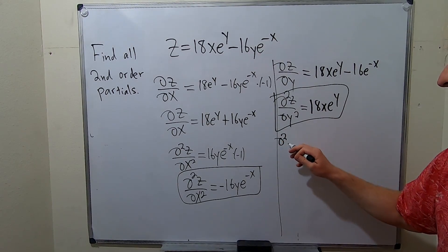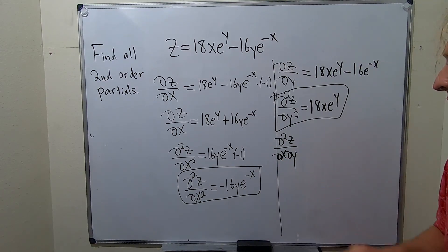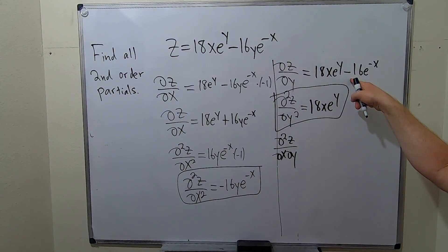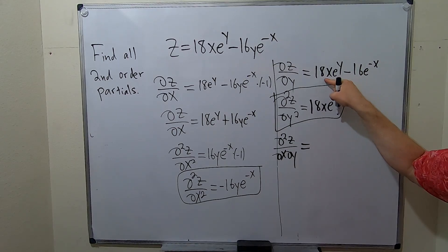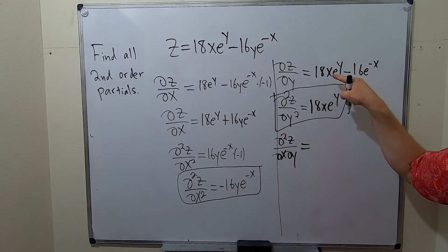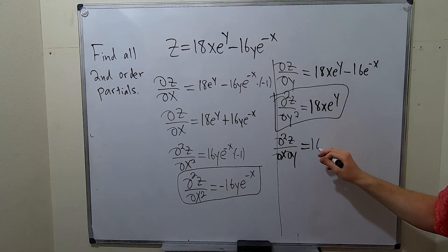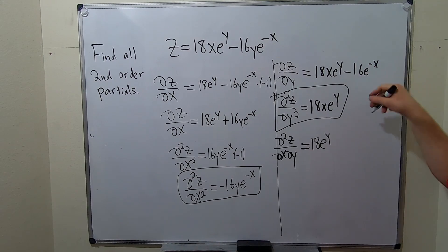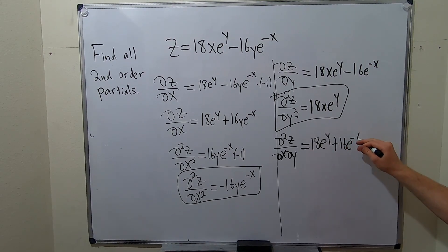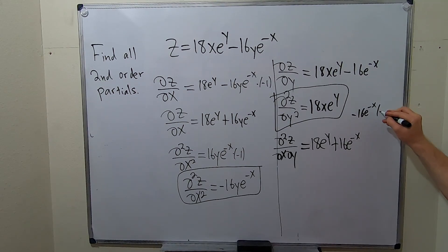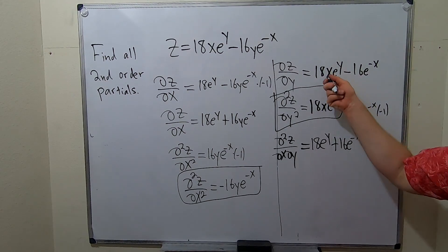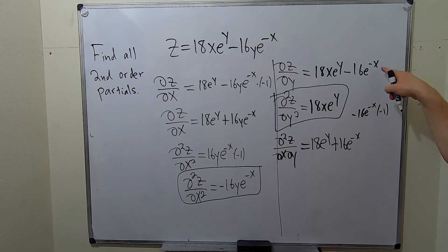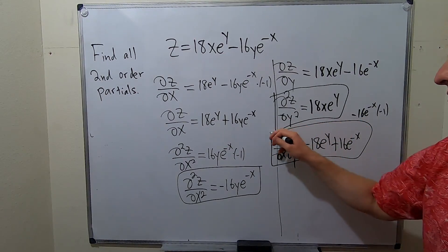Now let's do one of the mixed partials. This notation means you first differentiate with respect to y, then with respect to x. So we look at del z del y and take the partial with respect to x. The derivative of 18x is 18, so that gives 18 e to the y. For the second term, the partial of e to the negative x with respect to x gives e to the negative x times negative 1, and with the negative sign it becomes positive 16 e to the negative x. So our first mixed partial is 18 e to the y plus 16 e to the negative x.